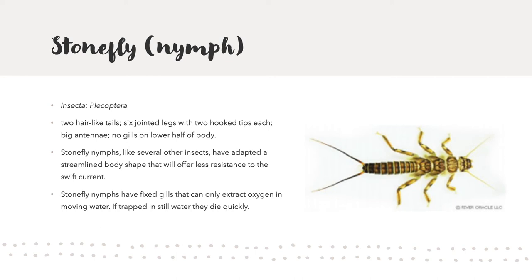Stonefly nymphs have two hair-like tails, six jointed legs, two hook tips each with big antennae, and no gills on the lower half of their body. Stonefly nymphs, like several other insects, have adapted a streamlined body that offers less resistance to swift current. This is because stonefly nymphs have fixed gills that can only extract oxygen in moving water. If they are trapped in still water for an extended period of time, they will die relatively quickly.